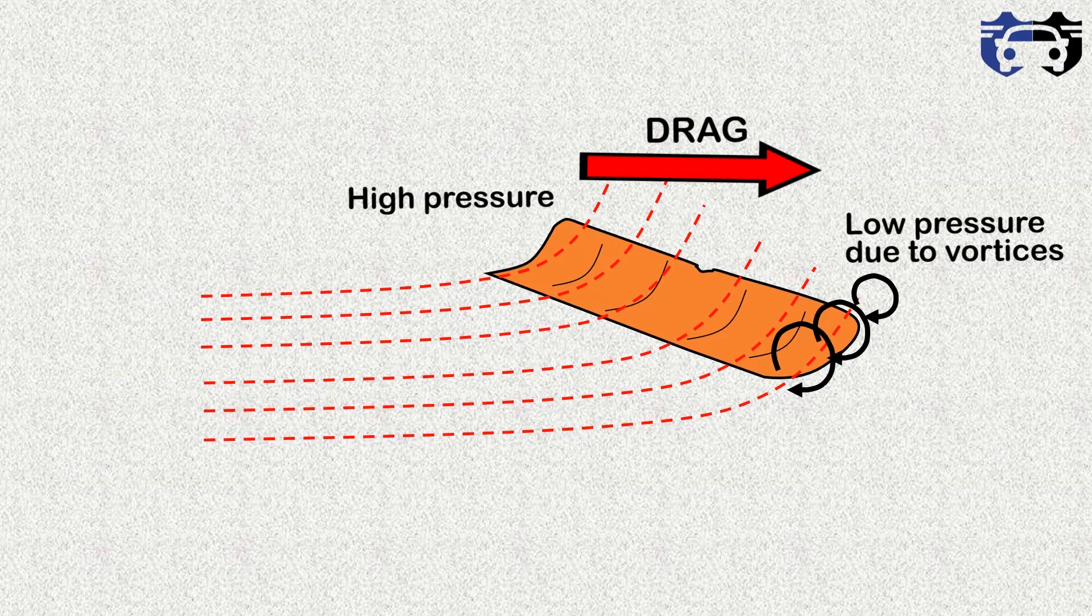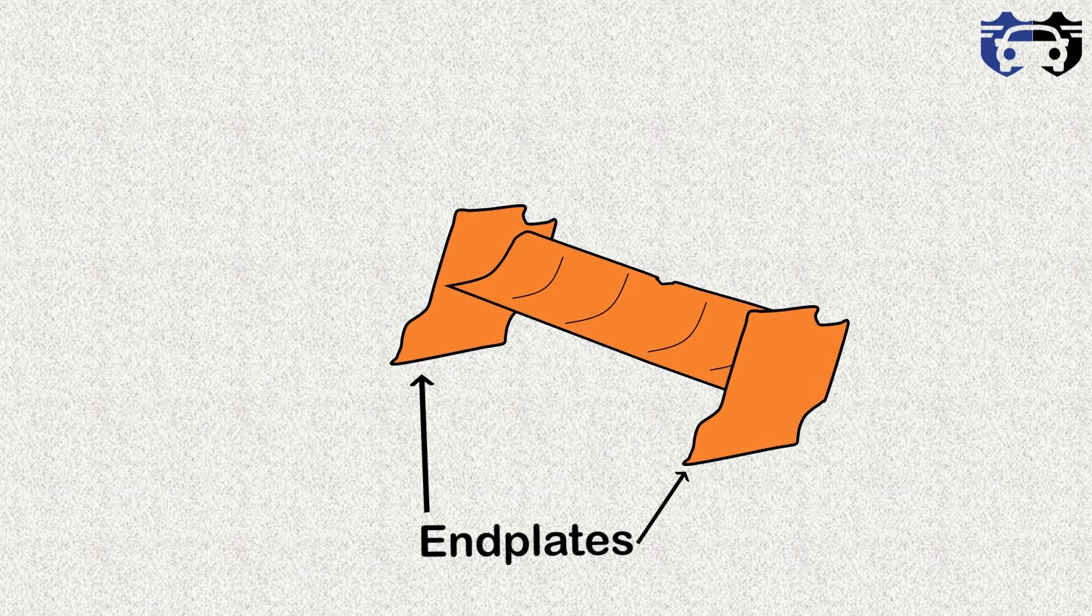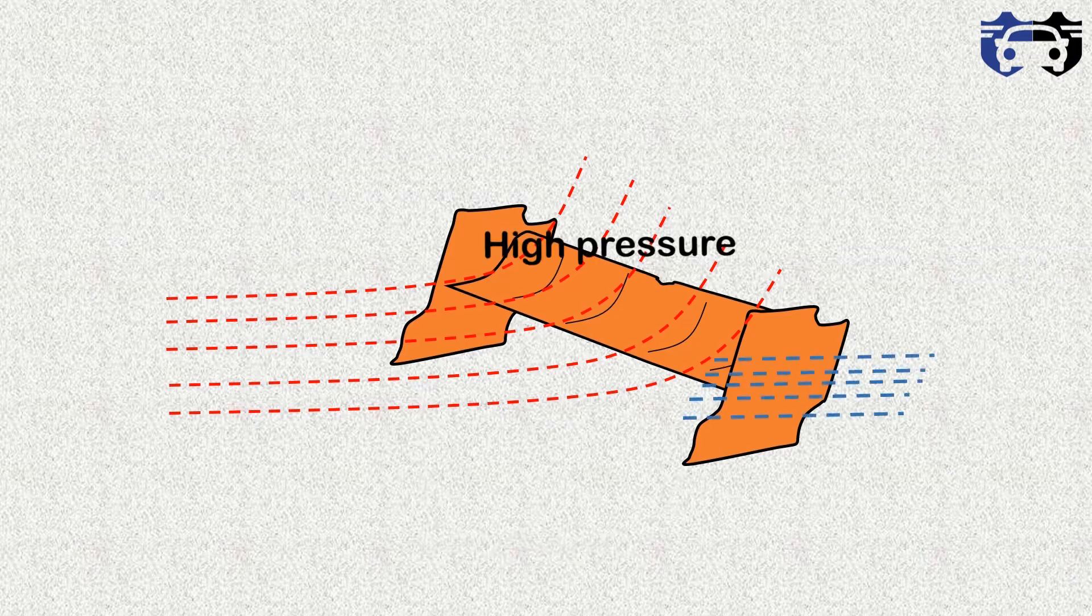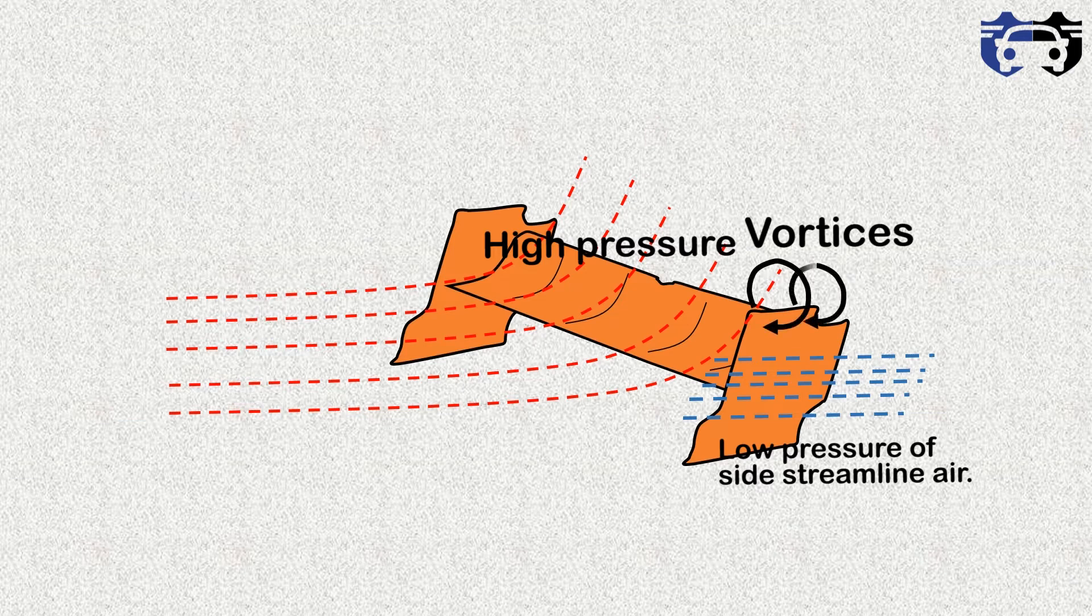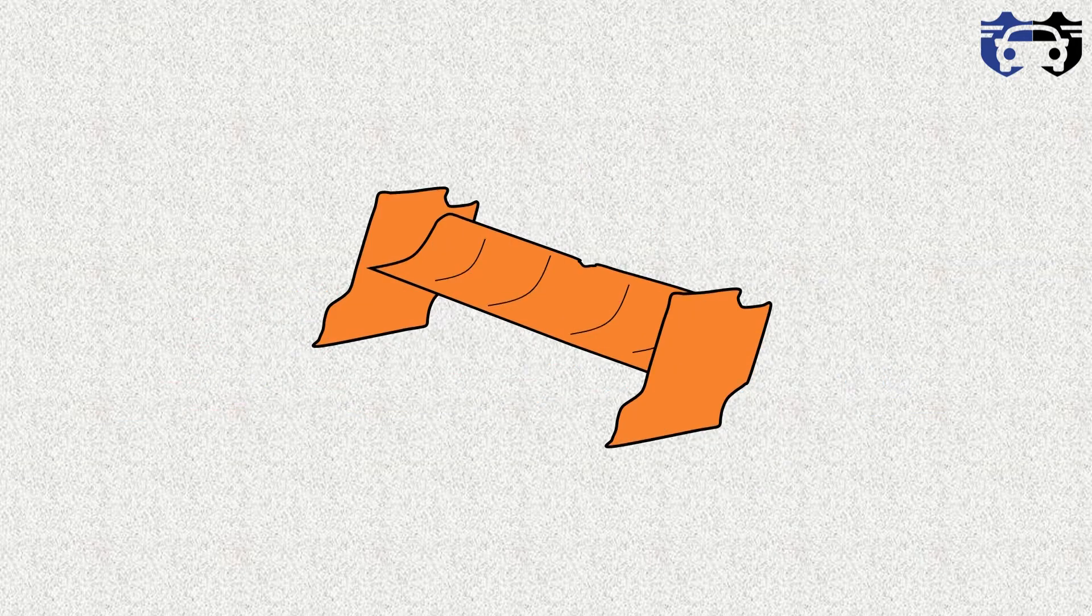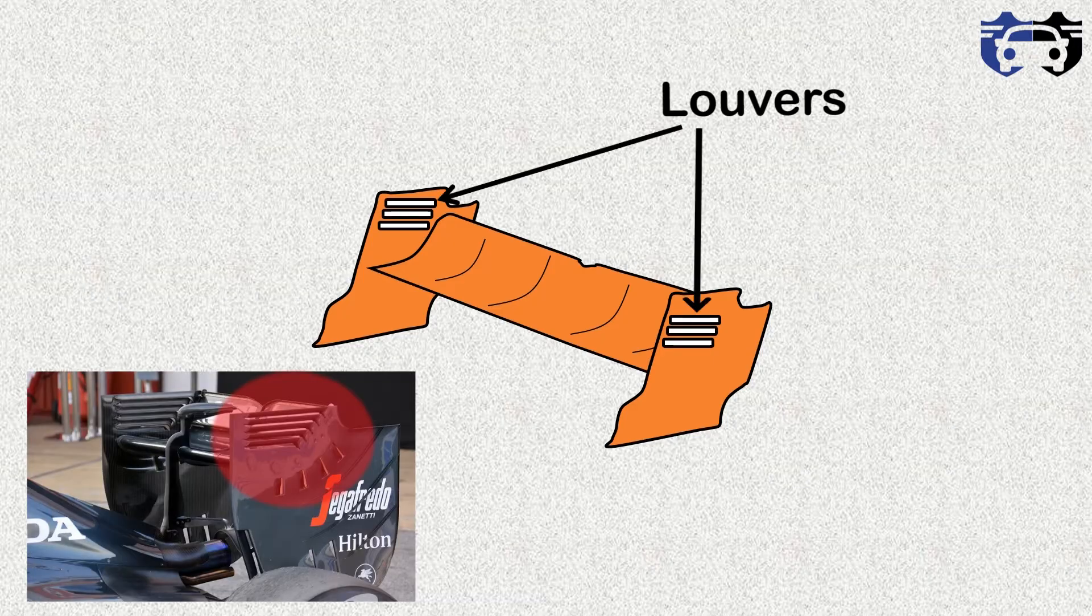For the prevention of vortices we use end plates, but this will not prevent the vortices completely. Still we are having the high pressure at the top and the low pressure at the sides. This will lead to generation of vortices again. For decreasing this effect of vortices, small slots called louvers are made at the end plates for mixing the high pressure inside air with the outside air.